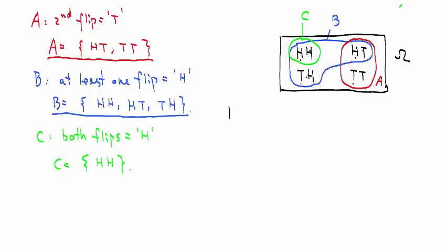Now, this is the definition: we say that an event A occurs if, when we run this random experiment, we see an outcome ω that happens to be in this set A. For example, if we see tail tail, then we say event A occurs.